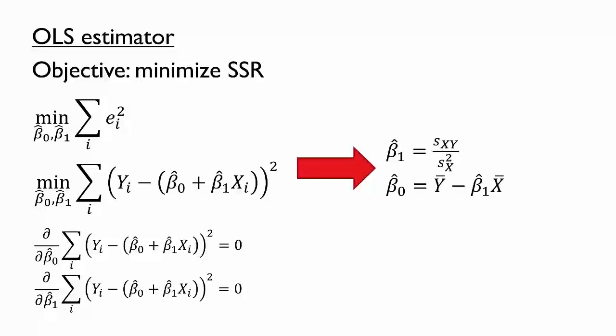The end result is the following simplified first order conditions. In other words, these formulas tell us the best fit line that minimizes the SSR. Specifically, the slope β̂₁ is the sample covariance of x and y divided by the sample variance of x, and the intercept β̂₀ is the mean of y minus the slope times the mean of x.